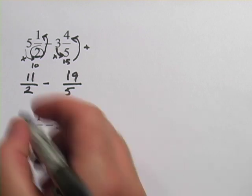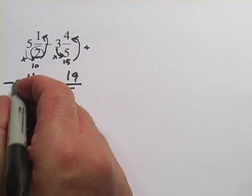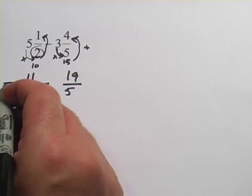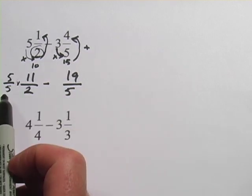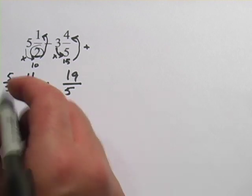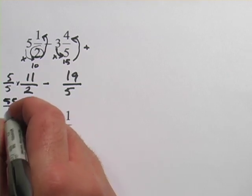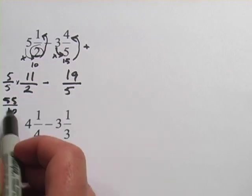And when we do that, remember we multiply by a fraction that's the same on the top and the bottom. In this case, I want to do 5 over 5. And I'm going to multiply that. So 5 times 11 is 55. And 5 times 2 is 10. So we've got a denominator of 10 there.